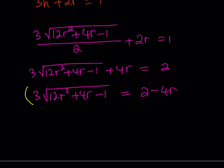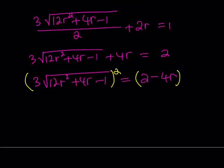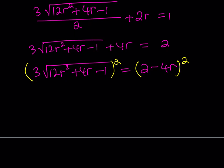Let's go ahead and square both sides. But remember, when you square both sides, then you get some extraneous solutions, which we're going to check at the end. So, let me square this. This is a product. So, it's going to be 9 times 12 R squared plus 4 R minus 1. And then the right-hand side is going to be A minus B squared, which is A squared minus 2 AB plus B squared, which is 4 minus 16 R plus 16 R squared.